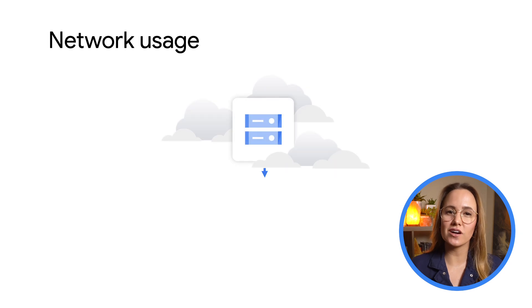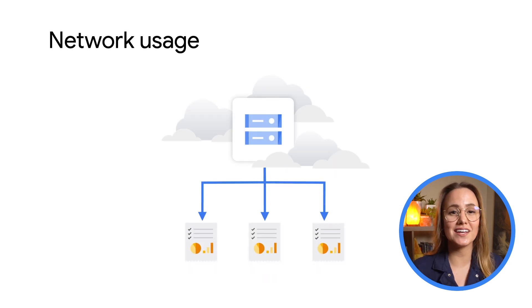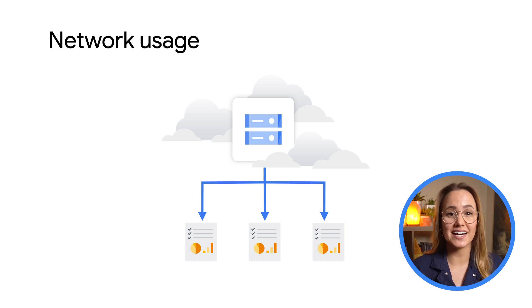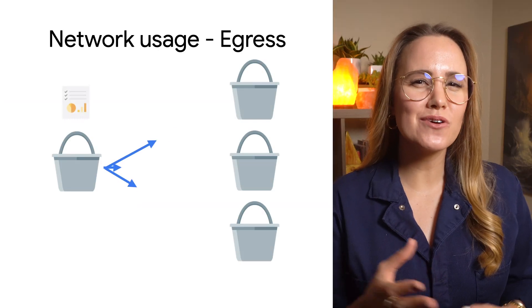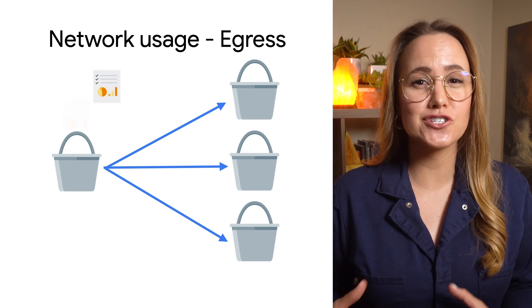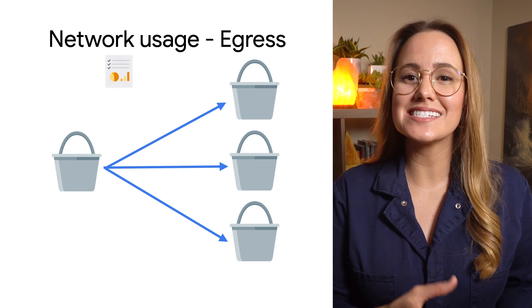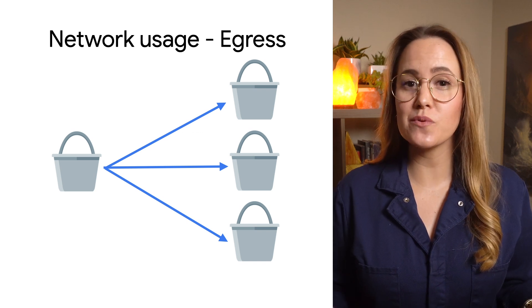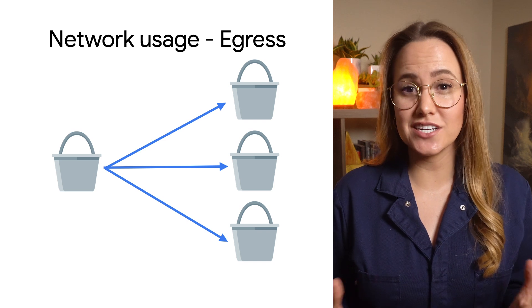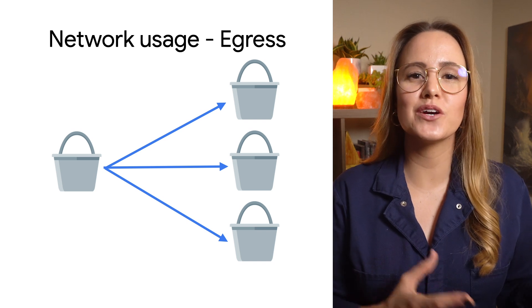When discussing network costs, we also need to distinguish between egress and ingress. Egress represents the data sent from cloud storage, like when reading data, and ingress represents the data sent to cloud storage, like when writing data. Network ingress is always free. For network egress, there are three categories to consider. First, when network egress is moving or copying data to other cloud storage buckets, or when other Google Cloud services access that data, this is considered network egress within Google Cloud and is free within regions, such as reading data in a US East 1 bucket into a US BigQuery dataset.